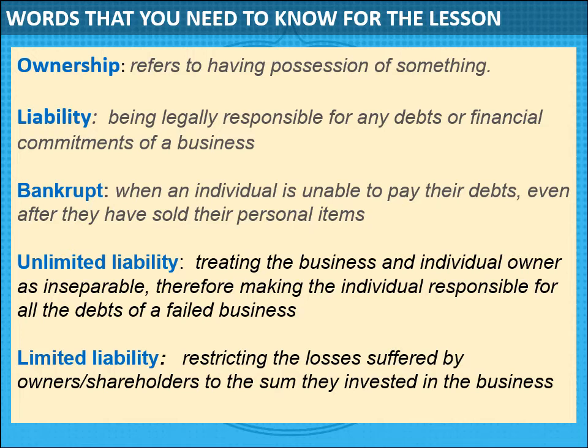Bankrupt: when an individual is unable to pay their debt even after they have sold their personal items. Unlimited liability: this is treating the business and individual owner as inseparable, therefore making the individual responsible for all the debts of a failed business. And limited liability: which restricts the loss suffered by the owner or shareholder to the sum they invested in the business. These words are going to come up highlighted in the same blue colour throughout the PowerPoint, so go back if you don't understand what a word means.